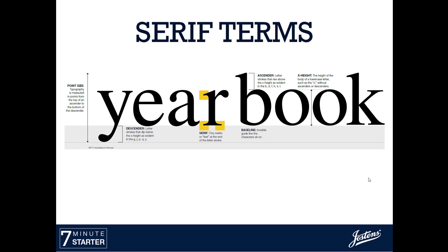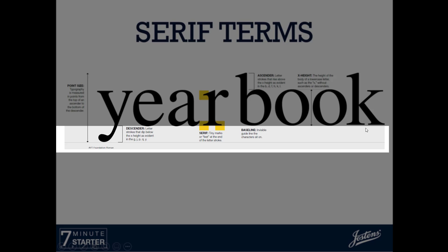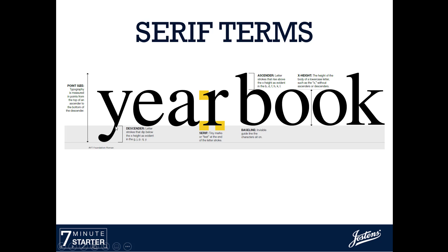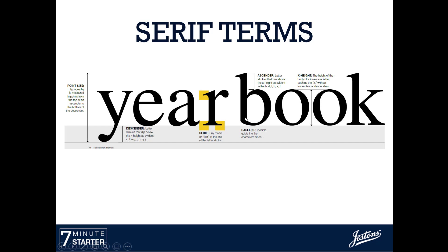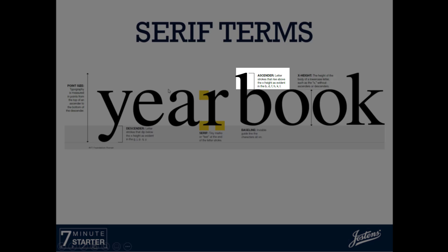I want to break down a couple of terms used specifically with serif fonts. Serif fonts have the little tiny feet, and the actual feet are what are called the serifs. The baseline is this gray box right here — it's the invisible guideline that all the letters sit on. If part of a letter goes below the baseline, that's called a descender because it's descending below. If part of the letters go above the top baseline, that's the ascender because it is rising above.